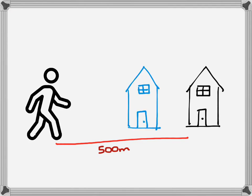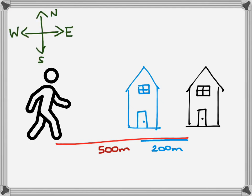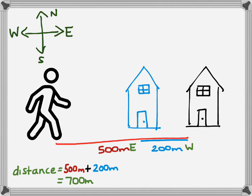So we're going to turn around and go back 200 meters to our friend's house. Let's look at our distance and displacement in this situation. We first walked 500 meters to the east and then walked back 200 meters west. With distance, the direction doesn't matter — it's just the total distance we cover. So we walked 500 meters and then another 200 meters. We add those together and our total distance is 700 meters.